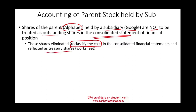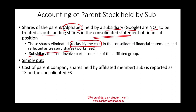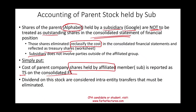Simply put, the subsidiary does not involve parties outside the affiliated group, so those shares are treated as treasury stock because the sub is considered part of the parent. The cost of parent company shares held by the affiliate is reported as treasury stock on the consolidated statements — the investment is taken out and reclassified as treasury stock. Also, dividends on that stock are considered inter-entity transfers that must be eliminated, since payments between the sub and parent are internal transfers.